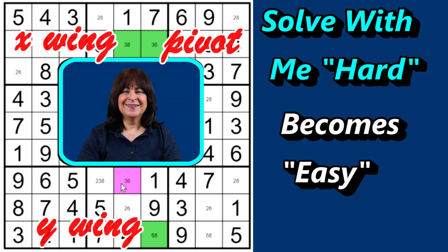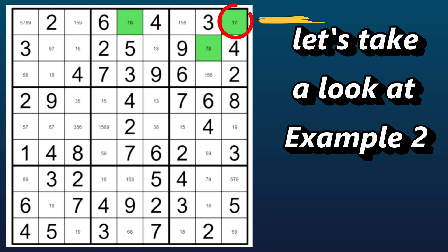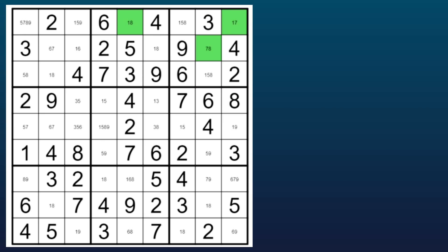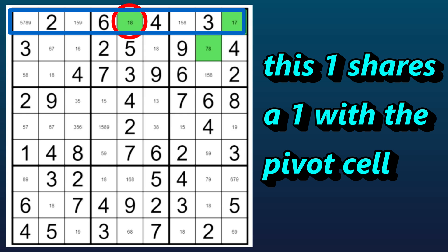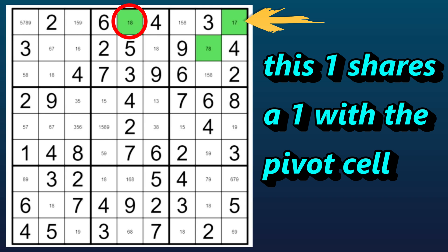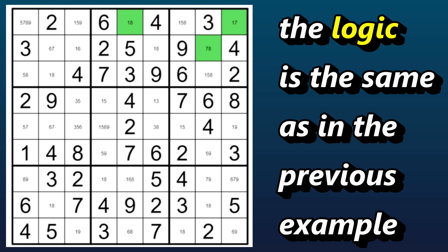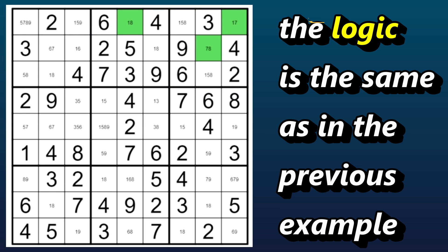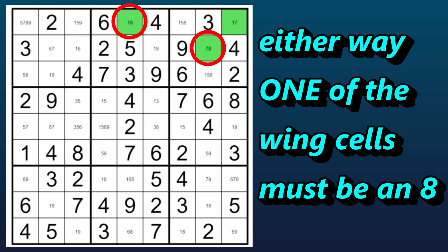You can see me solve the puzzle from beginning to end in episode 15 of my Solve With Me series. How about another example? Here is the pivot cell — the one-seven in the top row. And here are the XY wing cells. In the same block, we have a seven-eight, so this wing cell shares a seven with the pivot cell. And in the same row, we have a one-eight wing cell, so this shares a one with the pivot cell. In this example, the pivot cell shares the same row and block as the wings. The logic is the same as before: if this pivot cell is a one, then this wing will be an eight, but if this pivot cell is a seven, then this wing will be an eight. Either way, one of the wings is an eight.